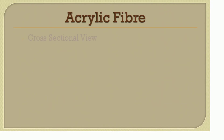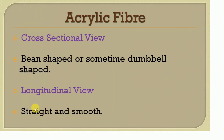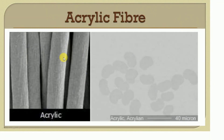Acrylic fiber in cross-sectional view is bean-shaped or sometimes dumbbell-shaped. In longitudinal view, it appears straight with a smooth surface. In the image, the longitudinal view shows a uniform surface, and in cross-section the bean shape is visible — and sometimes the dumbbell shape can also be observed.